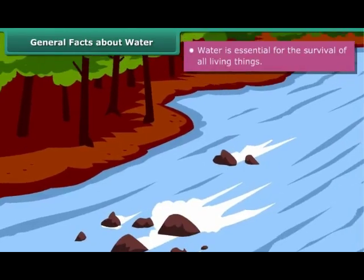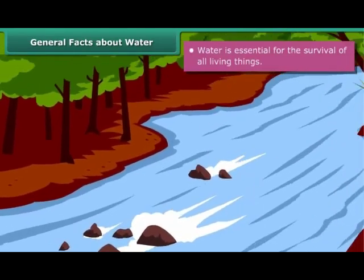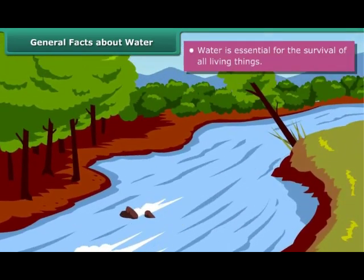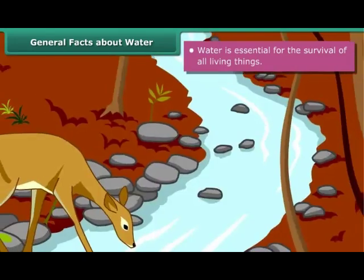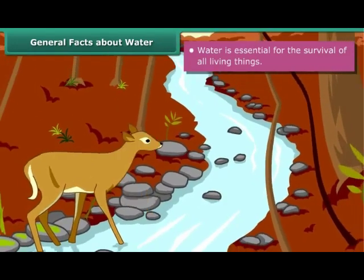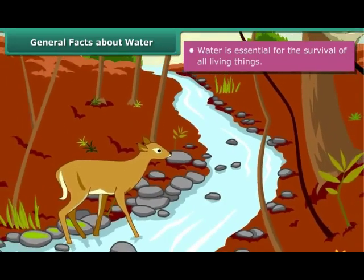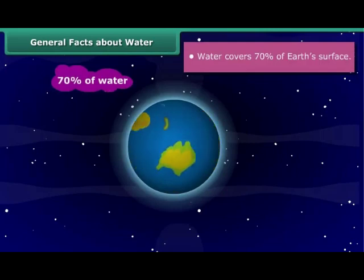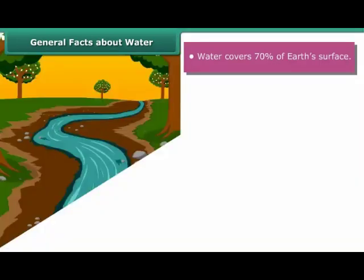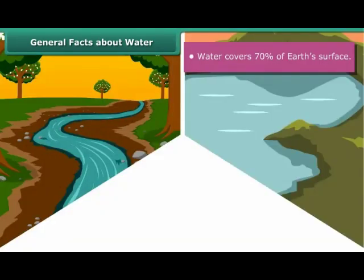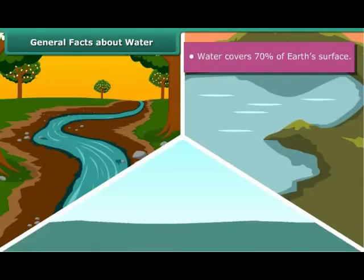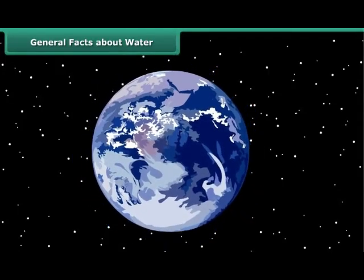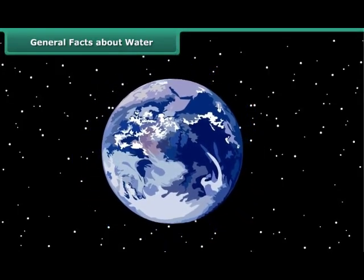Water is essential for the survival of all living things — plants, animals, human beings, and other life forms. It covers 70% of our planet in the form of rivers, ponds, oceans, and streams, making Earth appear blue in color when seen from space.